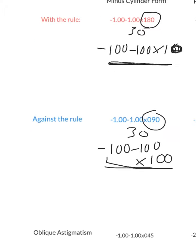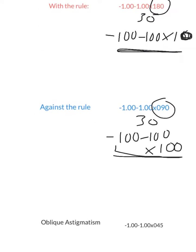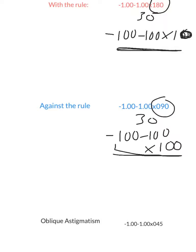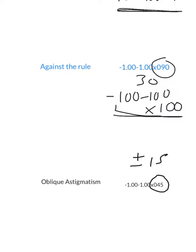Oblique astigmatism in minus cylinder form is when the axis is within plus or minus 15 degrees of 45. An example would be minus 1, minus 1 at axis 55. This is oblique astigmatism because the axis is within 15 degrees of 45.